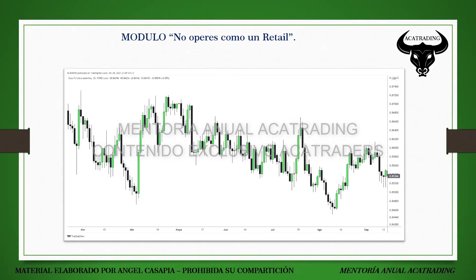Muchos traders empiezan a marcar order blocks pensando que son mágicos y empiezan a marcarlos en todos lados. Marcan todos los order blocks, quieren operar todos, les va mal con uno, luego aleatoriamente otro les da un ratio de 1 a 20, le toman screenshot y no tienen la menor idea de por qué ese order block les dio ese ratio. Nosotros sabemos que los ratios se generan porque construimos nuestros setups a partir de temporalidad mayor.